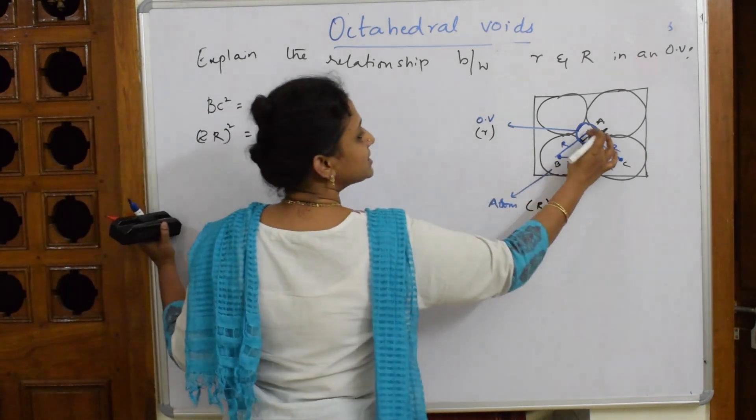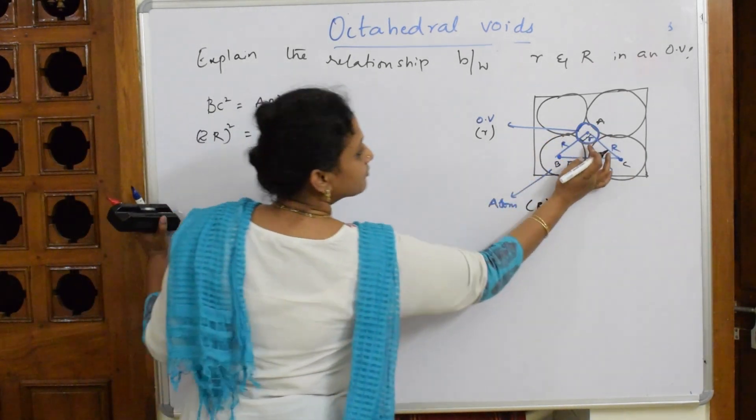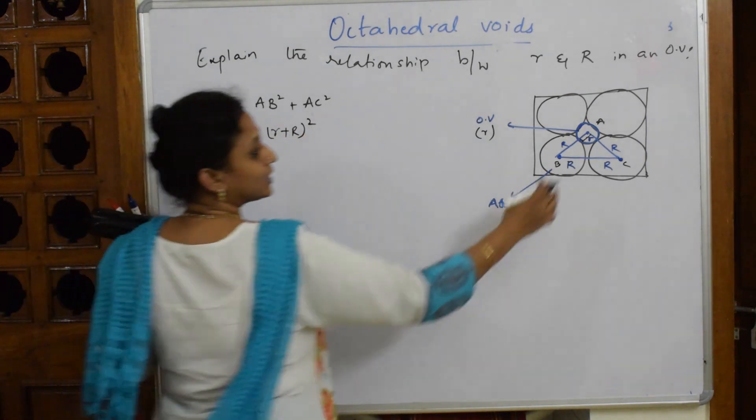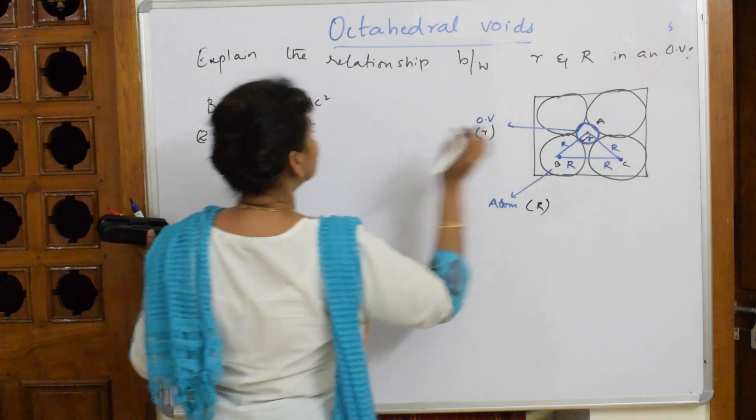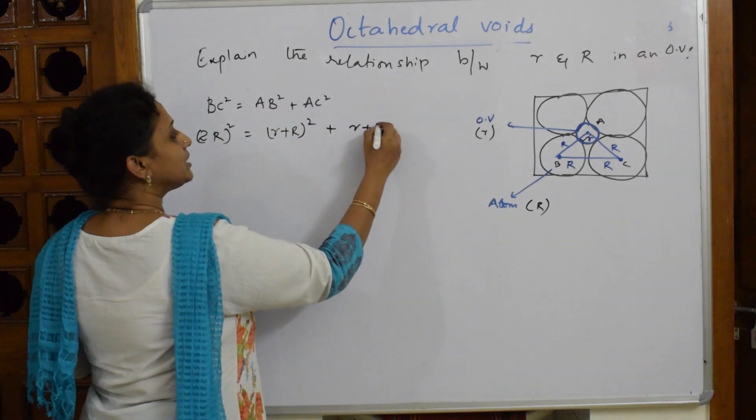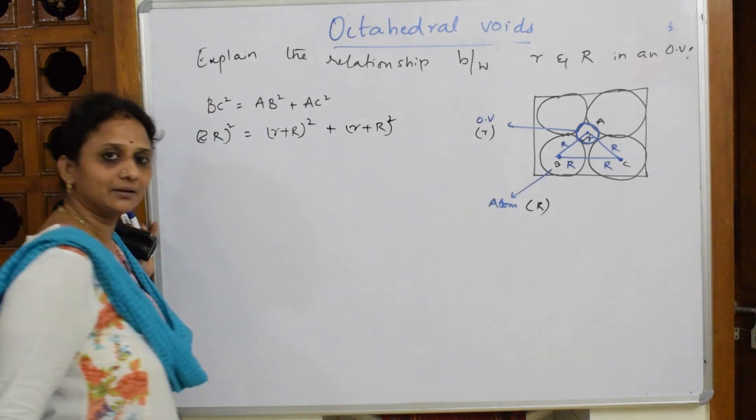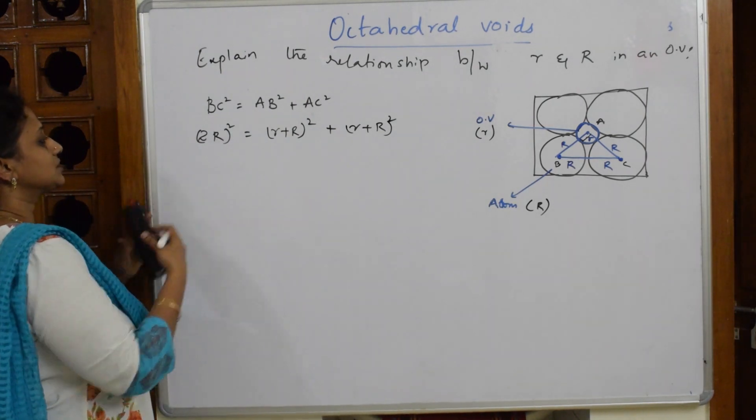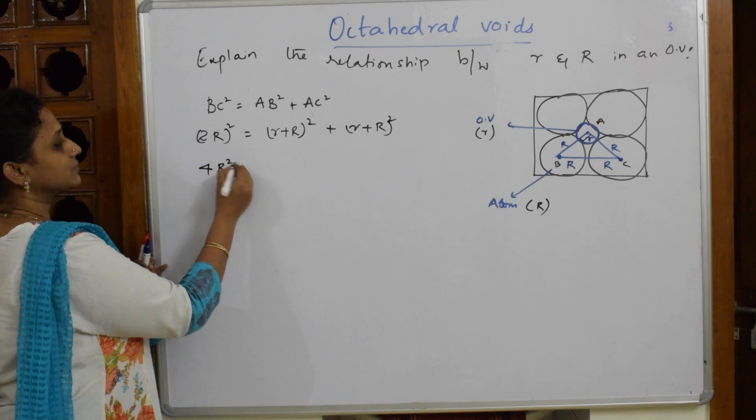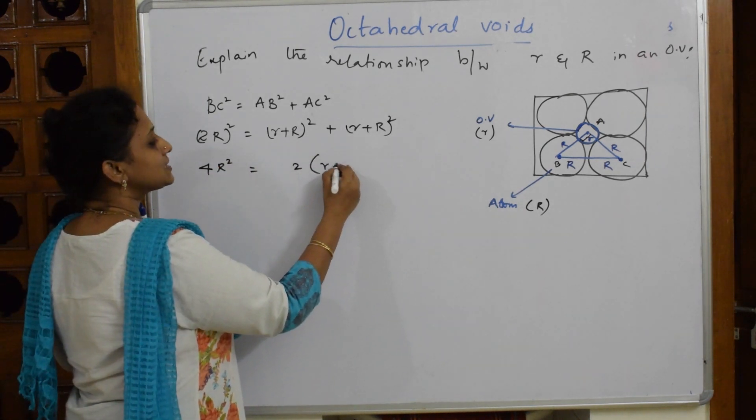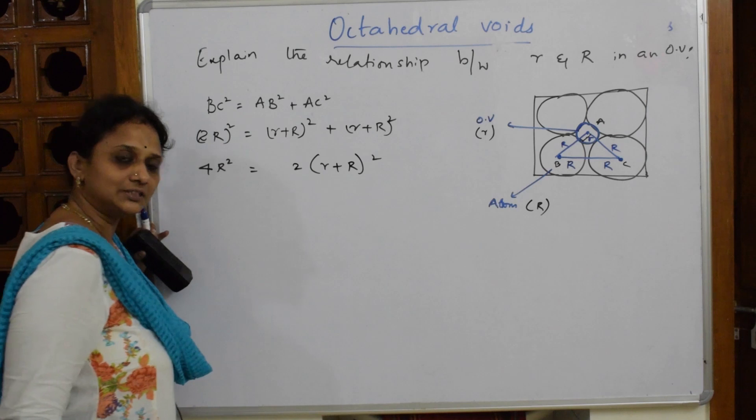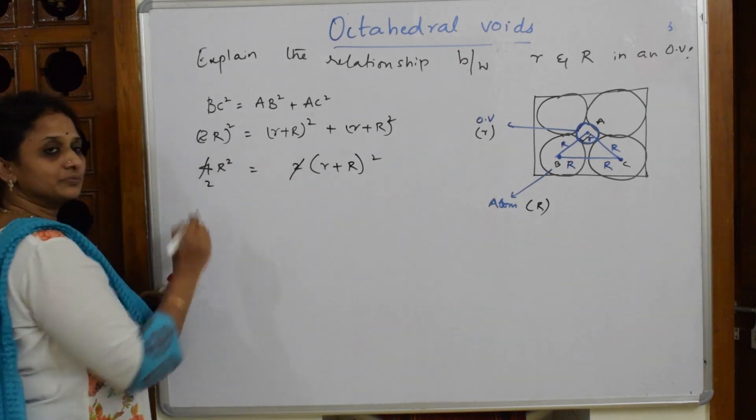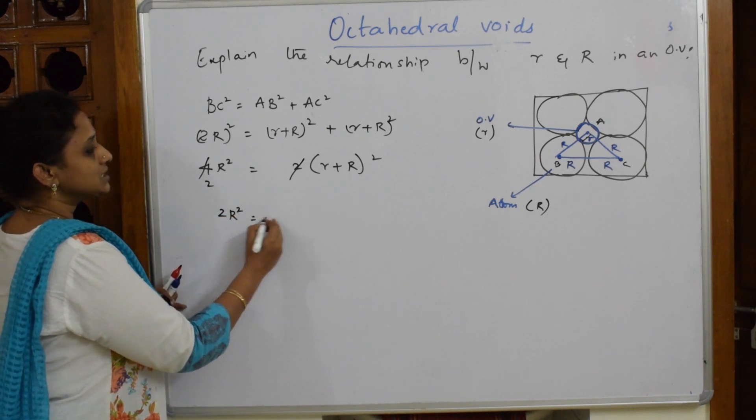What is AC²? Small r plus capital R. This is what we have done - for the void I took up small r and this is capital R. Further simplify: 2r, so this becomes 4r². Common terms, so r + R whole square. This is also done. Further if I simplify, if I can cancel here and 2, what does this look? 2R² = (r + R)².